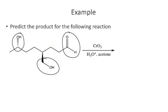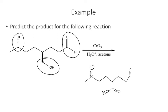The product has eight carbons. We get a ketone at one position, a carboxylic acid from the primary alcohol, and a carboxylic acid from the aldehyde on the end.